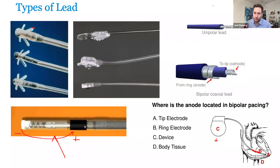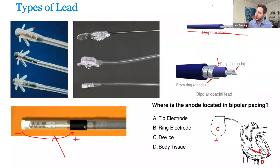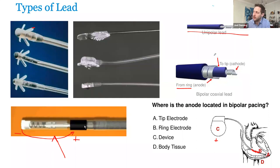The reason polarity matters is just how you complete the electrical circuit — electrons flow from negative to positive. A unipolar lead is much simpler, just a single core, versus the modern bipolar design. Modern bipolar leads wrap the ring electrode around the outside, separated by an insulator. Interestingly, the ring electrode has less insulation, so when you see modern bipolar leads failing, it's typically the ring electrode that's failing. In those cases, you can actually program to unipolar to circumvent this issue.